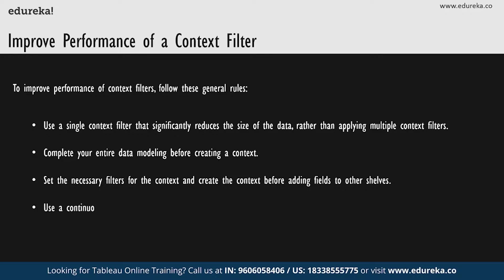Finally, if you want to set a context filter on a date, you can use continuous date. However, if you're using date bins like year of date, or context filters on discrete dates, these are usually very effective. Understand that if your data is heavily indexed, context filters may not provide the best performance improvement and may actually cause slower query performance. Context filters can also adversely affect query performance improvements when you use the Assume Referential Integrity option in the data menu of the data source.